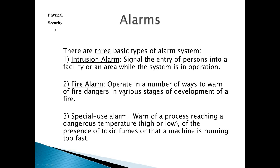There are three basic types of alarm systems we need to be familiar with. The first are intrusion alarms, or what we call IDS — intrusion detection systems. They signal the entry of persons into a facility or an area while the system is in operation. It can be as basic as what you have in your home, your ADT-type systems, all the way up to multiple types of sensors working in integration with each other.